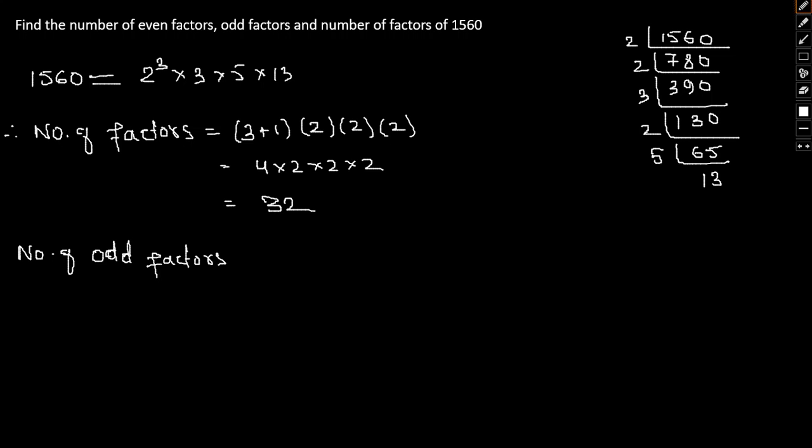So for number of odd factors we'll exclude this entire 2 term. Then we will have only odd factors, 3, 5, and 13. So number of odd factors would simply be 2 into 2 into 2, that is 8. Number of odd factors will be 8, and again number of even factors.